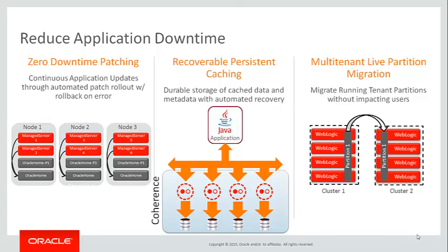Reduced application downtime can be achieved with zero downtime patching. Zero downtime patching is the ability for application updates to be done through automated and orchestrated patch rollouts with rollback on error. Oracle Homes, Java Homes, and even your applications can be updated.